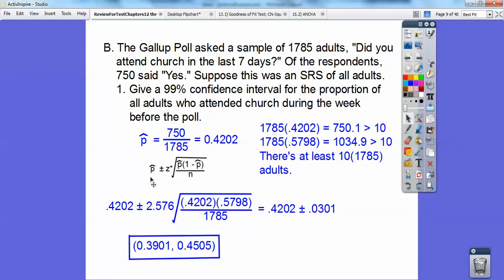So here's my formula. P hat plus or minus the Z star square root of P hat, 1 minus P hat divided by N. So 99% confidence interval, my Z star is 2.576. There's my P hat and then just plug it all in and I get to that and then that's what I get right there.